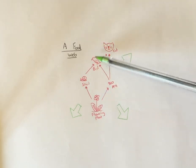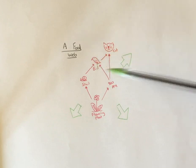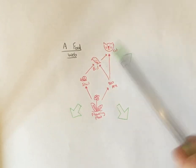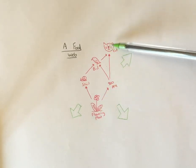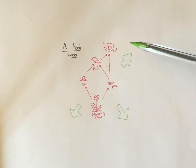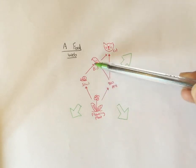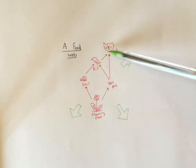We've then got a secondary consumer up here which is the bird, and depending on where you go in the food chain, the cat here is either a secondary consumer or is the tertiary consumer.